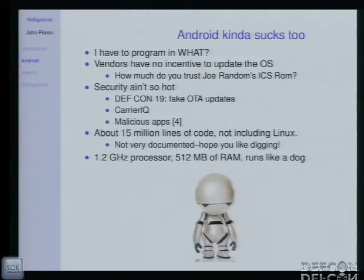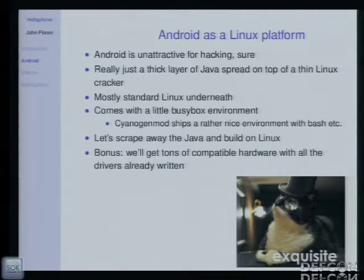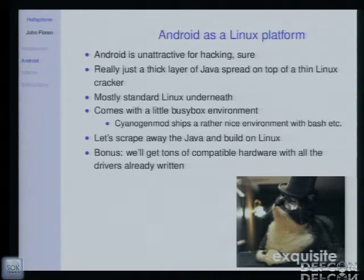My phone has a 1.2 GHz processor and 512 megs of RAM, and it still runs like a dog — it ran like a dog when I got it. You run a few apps and your memory's all full. So maybe you don't want to hack on Android as a Java environment. But when we looked at it, we realized Android is just this pile of user-level Java and a few C++ daemons all running on top of a Linux kernel, with a BusyBox environment down there.